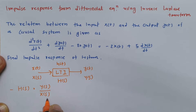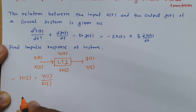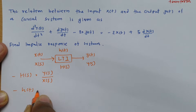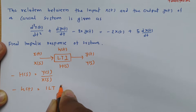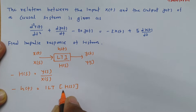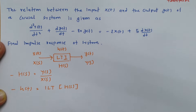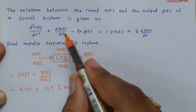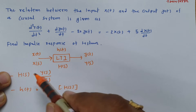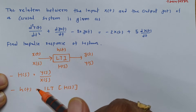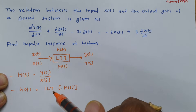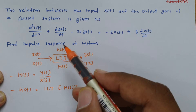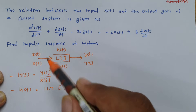To get the impulse response, all we need to do is take the inverse Laplace transform of H(s). So if you take the inverse Laplace transform of H(s), you will get the impulse response h(t). We have a differential equation, and first we need to use it for the transfer function calculation. Once we have the transfer function, by taking its inverse Laplace transform we obtain the impulse response. Let us calculate this step by step.